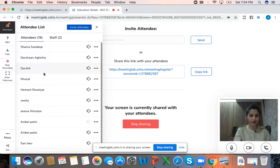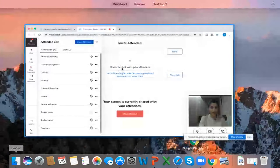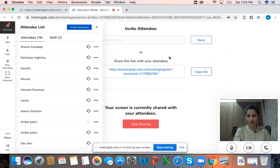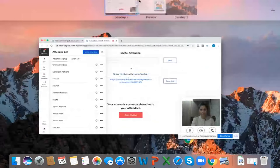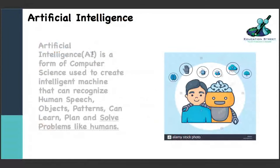I had to click on the recording button and I returned back to the topic - sorry for this. So as I did, I would just like to repeat it again: AI is a form of computer science. It is used to create intelligent machines that can recognize human speech, objects, and patterns, and can learn, plan, and solve problems.